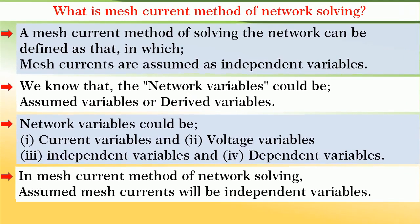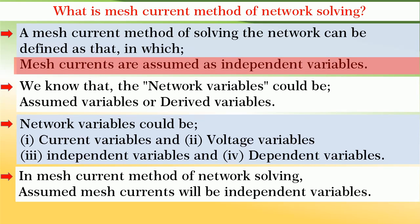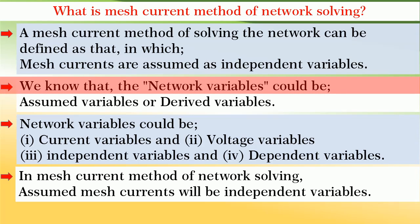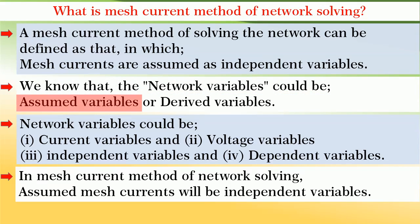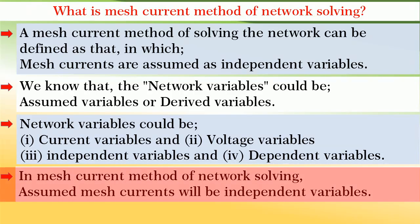First, we shall see what the mesh current method of solving the network is. It can be defined as the method in which mesh currents are assumed as independent variables. We know that network variables could be assumed or derived, current or voltage, independent or dependent. Therefore, in the mesh current method, assumed mesh currents will be independent variables.